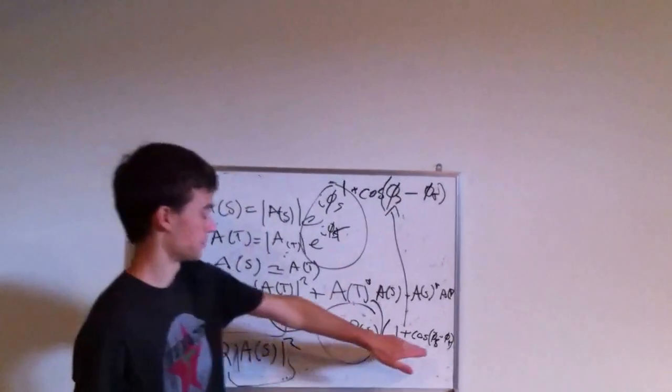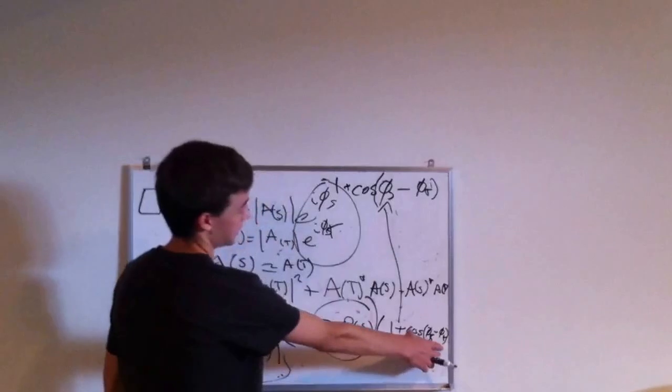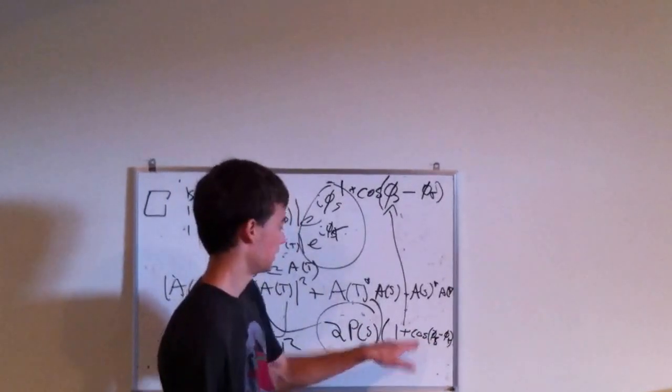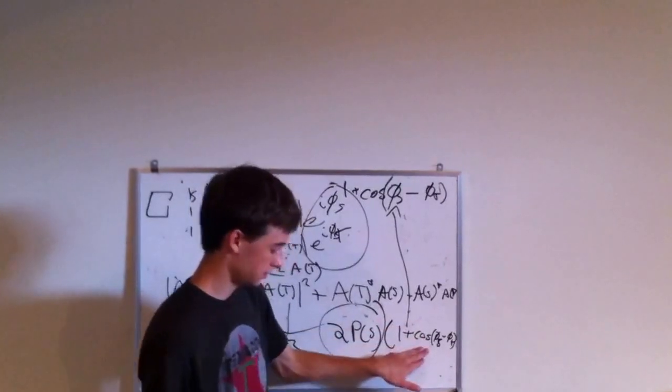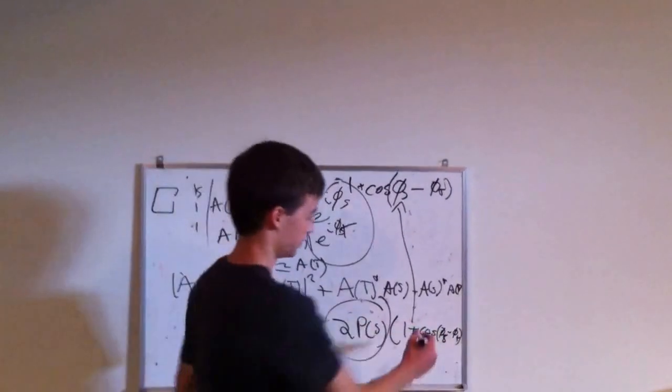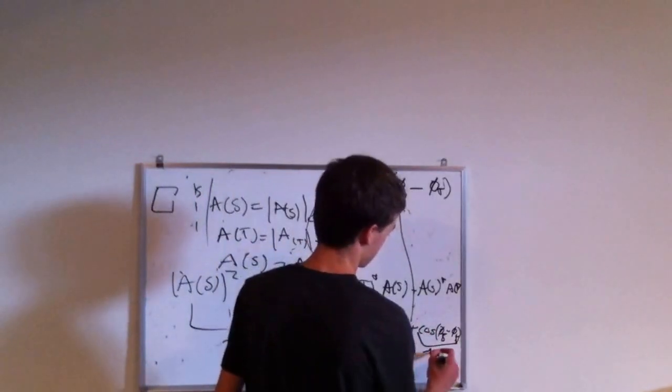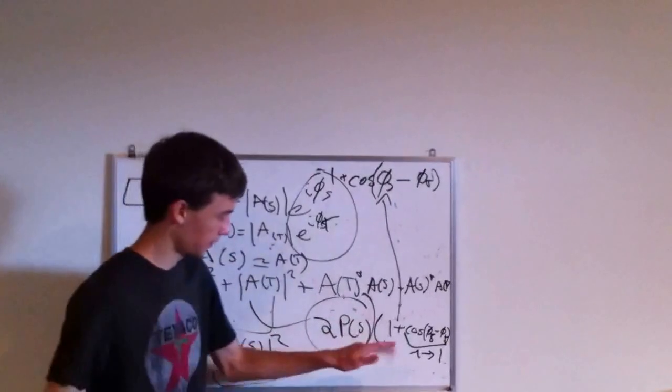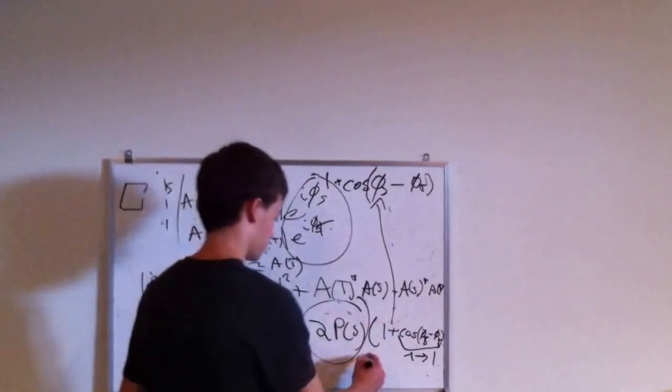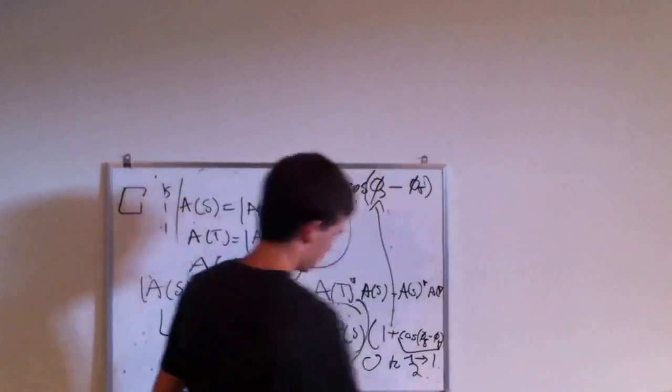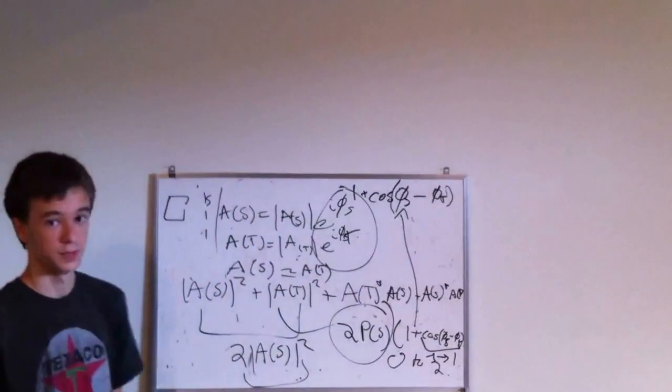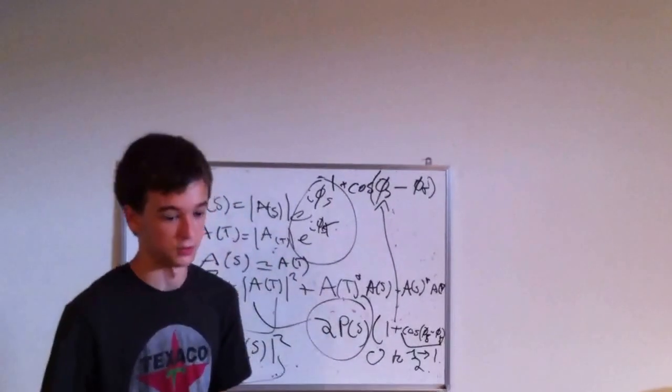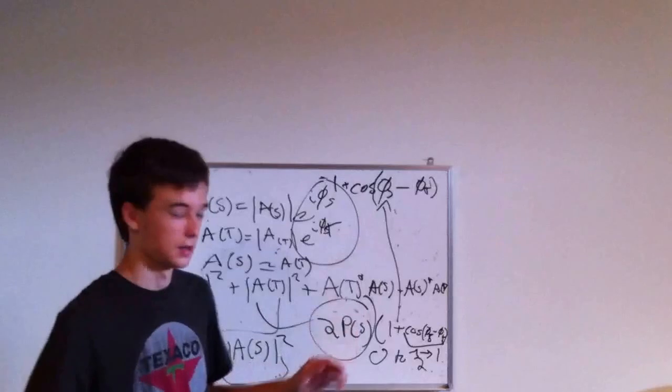So this is one plus the cosine of phi S minus phi T. Now again this is unimportant, but what you need to know is this can really be anywhere from negative one to one. This value can be negative one to one. Now what does this tell us? So when you add that to one, it can either be anywhere from zero to two, which means that in quantum mechanics the probability of something happening can be anywhere from zero times the classical probability, which means that it's nothing, it cannot happen.